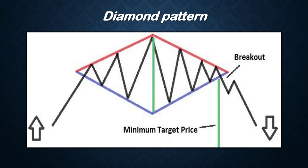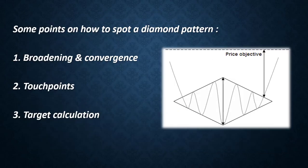This pattern is a combination of a broadening triangle and a symmetrical triangle. These patterns can come in the middle of the trend, but the returns are not so good in that case. Before going into the examples, let's quickly discuss some points on how to spot a diamond pattern.